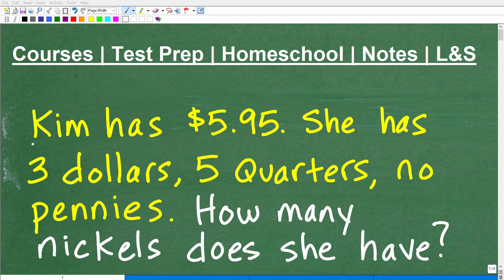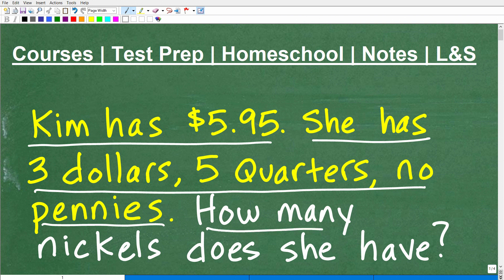It says, Kim has $5.95. She has $3, 5 quarters, and no pennies. This is what makes up this $5.95. But the question is, how many nickels does she have?